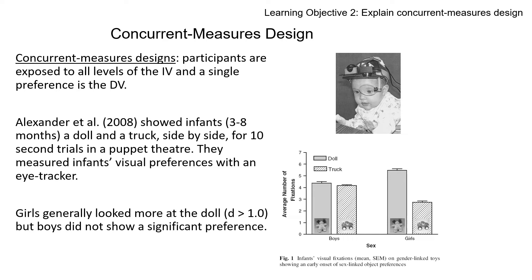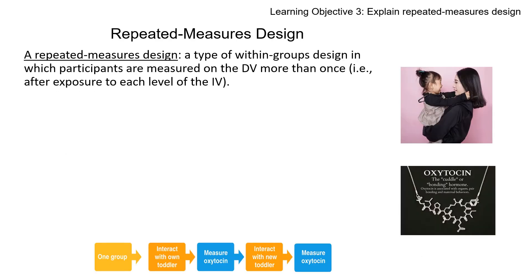So concurrent measures design is a special type of within groups design where participants are exposed to all levels of the independent variable at the same time, and the one they prefer — the one they reach for, think about, or give a general opinion preference on — is the dependent variable. The main design we're looking at, before we go back to paired and matched samples, is repeated measures design, where participants are exposed to one level of the independent variable, measured on the dependent variable, then exposed to another level, and measured again.